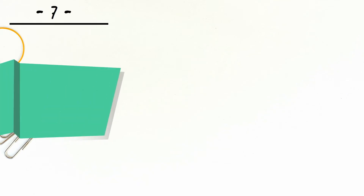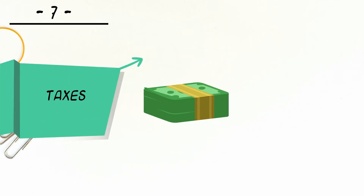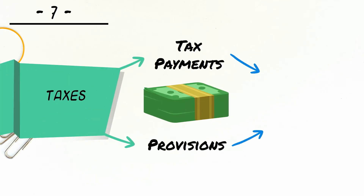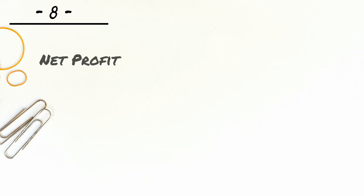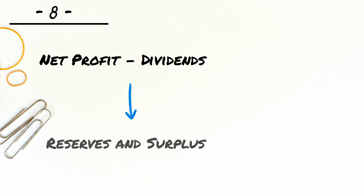Provision for tax payments have to be made in the liabilities side of the balance sheet. Net profit belongs to shareholders. After dividends are paid out from net profit, the remaining amount goes to reserves and surplus on the liabilities side of a balance sheet.